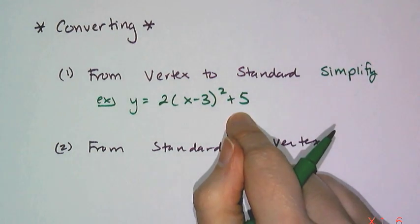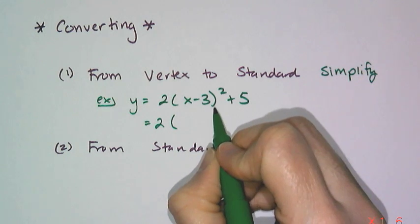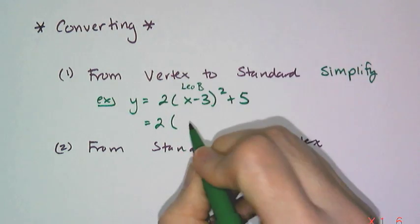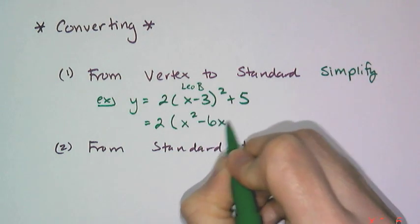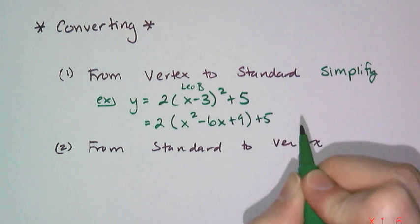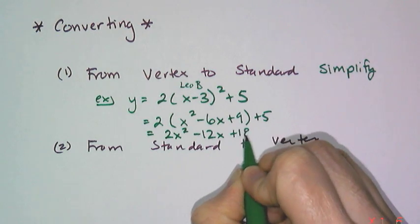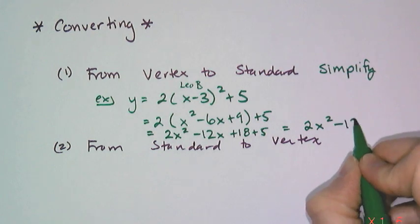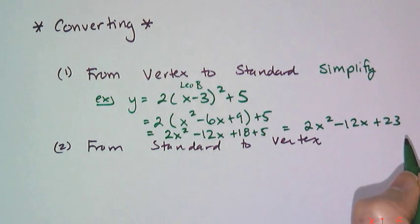Then to get this thing into standard form, I have to multiply out x minus 3 quantity squared, which remember you have to use FOIL or LEOB to do that. So I get x squared minus 6x plus 9 plus 5, and then you distribute, you get 2x squared minus 12x plus 18 plus 5, which gives you 2x squared minus 12x plus 23. And so then this gives me standard form, and then I can just find the y-intercept, and I have the vertex.